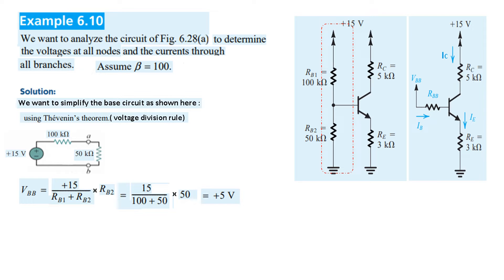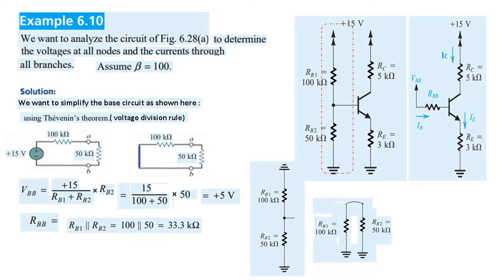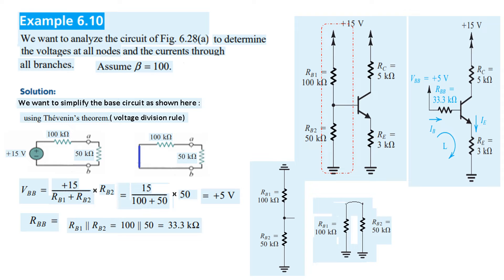Now, how much is the equivalent resistance? For Thevenin's resistance, we short circuit the source. If you look from the circuit and ground the source, you can see these two are in parallel. Solving in parallel, we find R-Thevenin, Rbb, equals 33.3 kΩ. In the new circuit, we have Vbb = 5V and Rbb = 33.3 kΩ. We will proceed with this circuit.